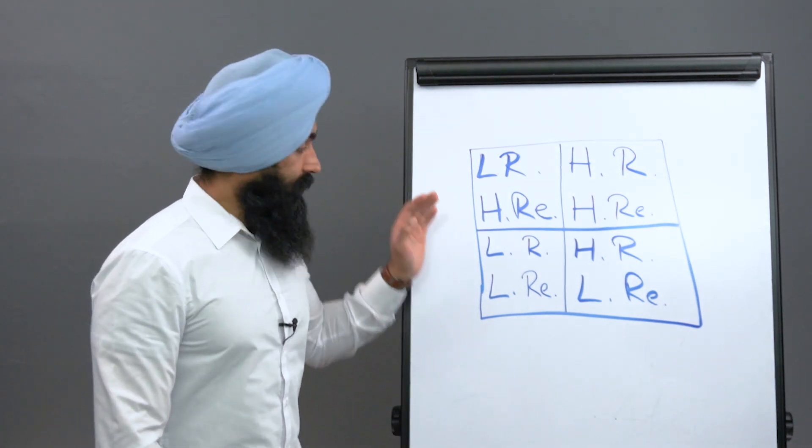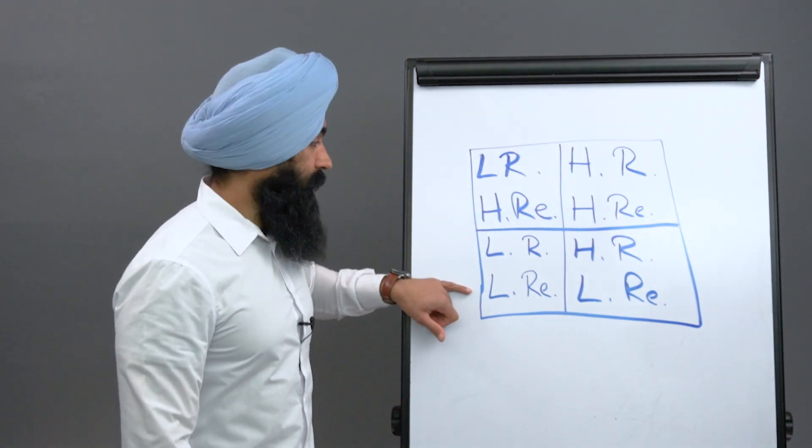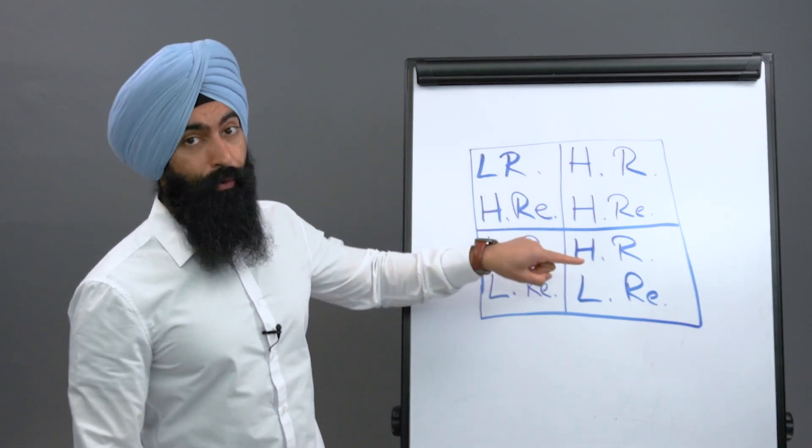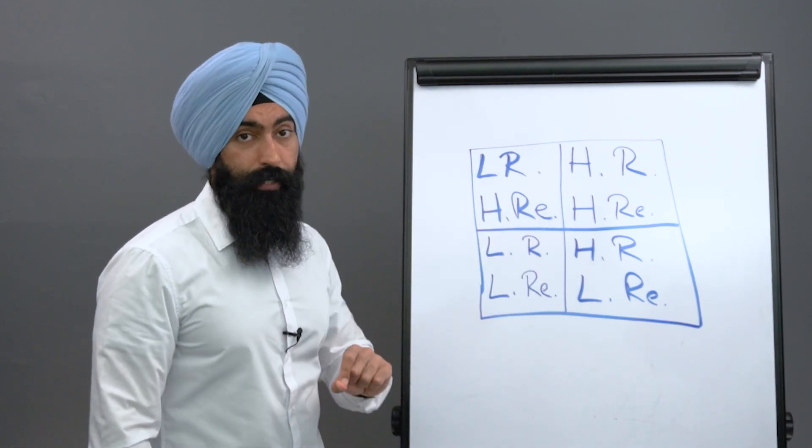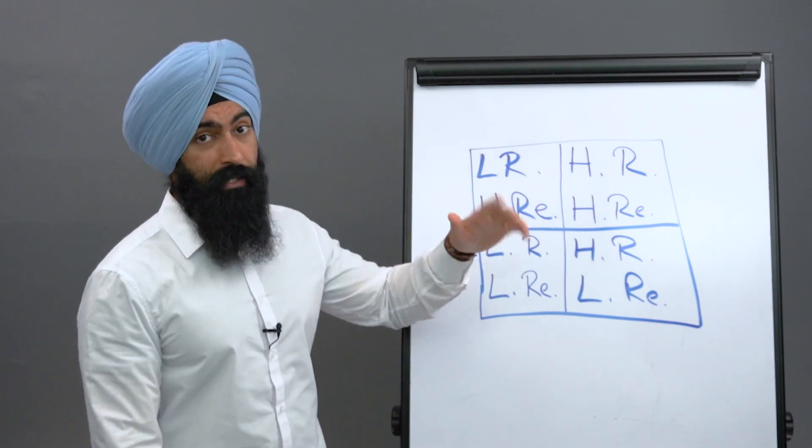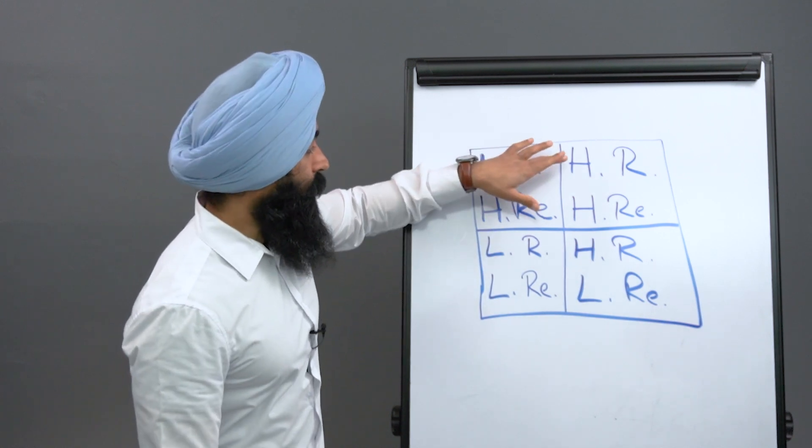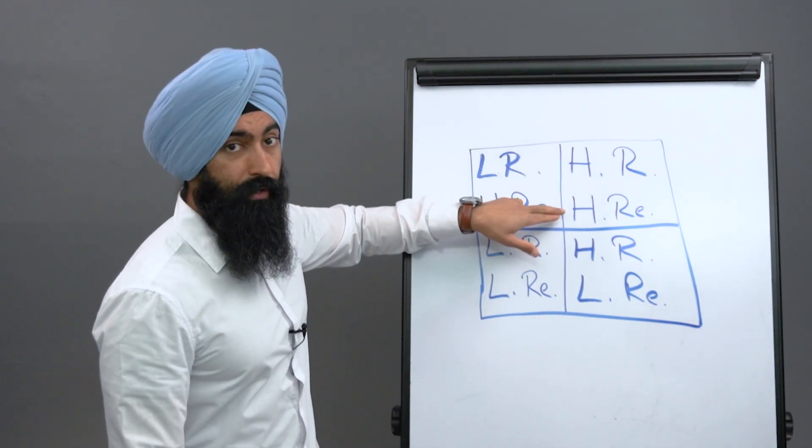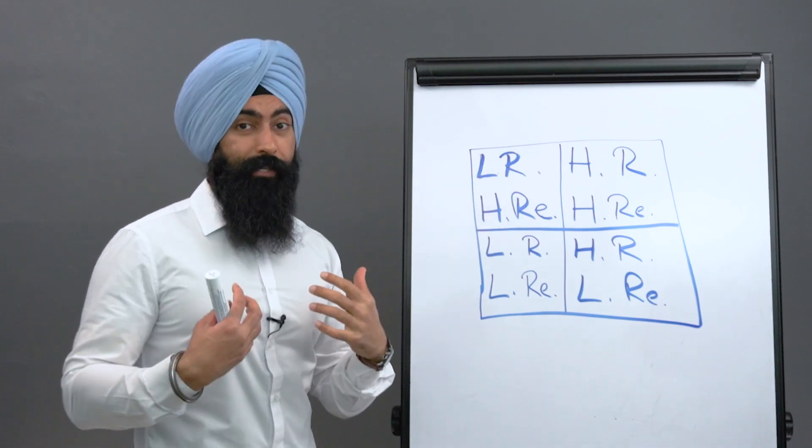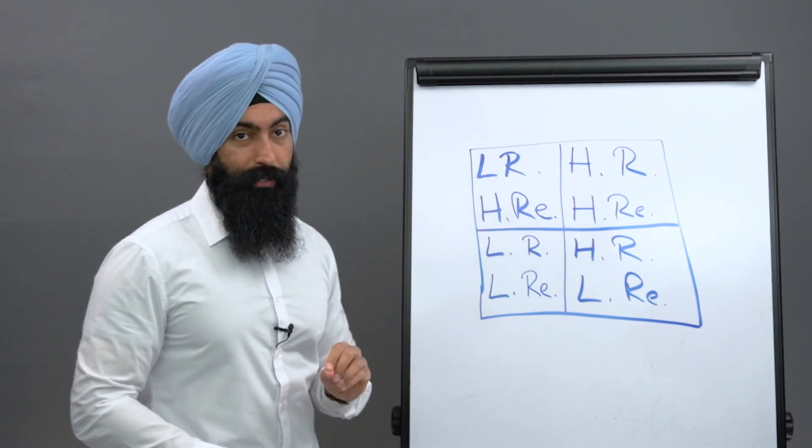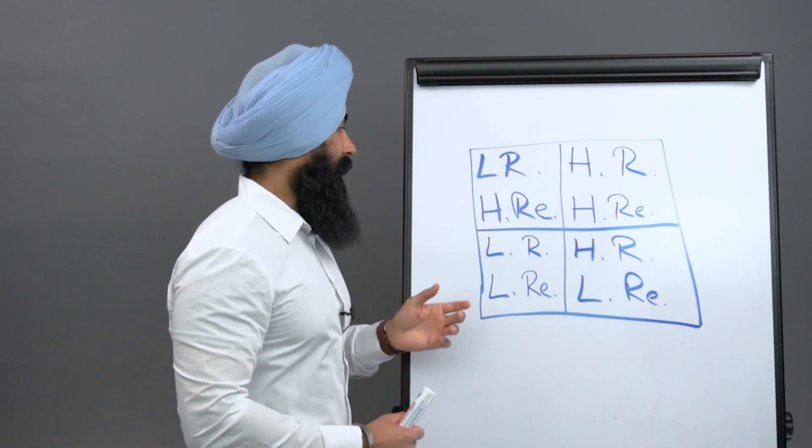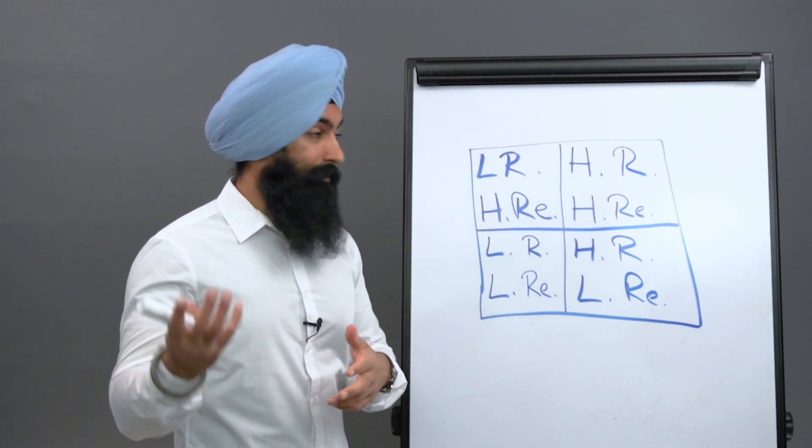Number one will be the low risk and low reward opportunity. Number two is the high risk, but low reward opportunity. Number three, which is probably the most popular, is the high risk, but also high reward opportunity. And then number four, which is my personal favorite, is the low risk, but high reward opportunity. I like this one because I have the least risk, but also the most upside.